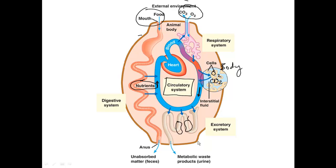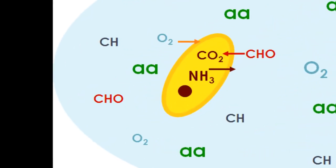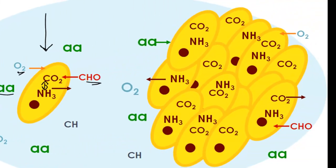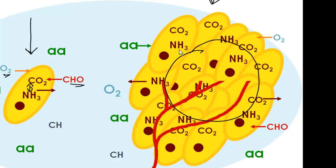That's a general description of the circulatory system, but we haven't always had one. Looking at this unicellular bacteria on the left — it needs oxygen, amino acids, and carbohydrates, and produces waste such as CO2 and NH3. The good thing about these cells is that they are unicellular; they can diffuse everything because every part of their body is in touch with the external environment. Fast forward to a multicellular organism: they still need to do the same things, but inner cells aren't in contact with the outer environment and can't rely on diffusion. So they've developed a circulatory system to do that for them.